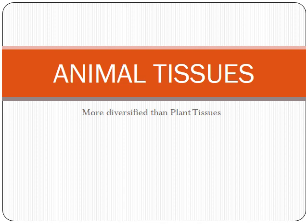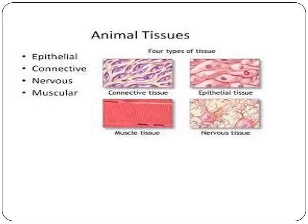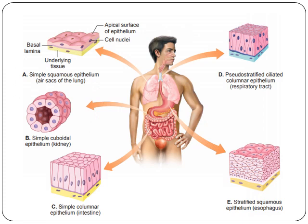Today we are going to discuss animal tissues. We have already studied plant tissues, where the tissues are basically dead in nature. But here in animal tissues, the cells are living, and therefore the diversification is more than in plant tissues. Animal tissues are of four types: epithelial tissue, connective tissue, nervous tissue, and muscular tissue. Look at the diagram showing epithelial tissues situated in different parts of our body.